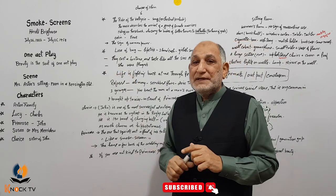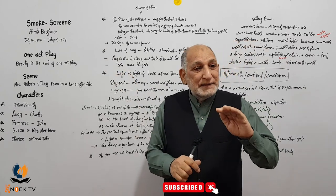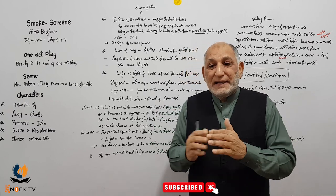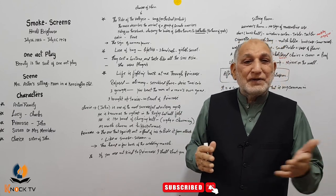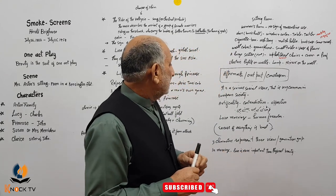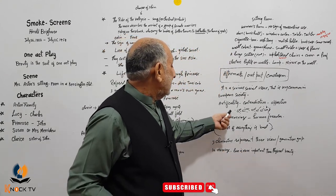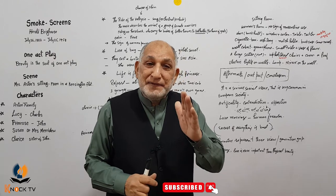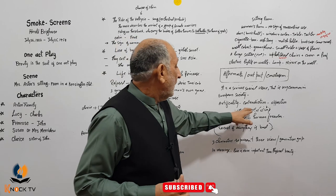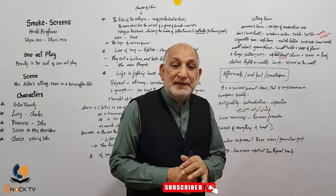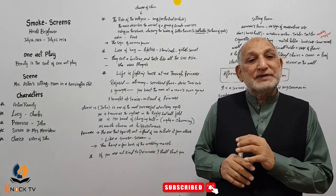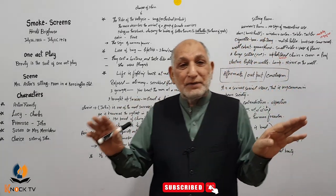Smoke Screen کے تین مطلب ہیں: ایک تو تضاد ہے — جو کہتا ہے وہ ہوتا نہیں۔ دوسرا contradiction ہے — ایک بات کچھ کرتا ہے، دوسرا کچھ کرتا ہے، جیسے گاؤں اور شہر کی زندگی میں فرق۔ تیسرا artificiality ہے — جو آپ ہوتے ہیں وہ نظر نہیں آتے۔ Opposition اور contradiction آپ کو پوری کہانی میں نظر آئے گی۔